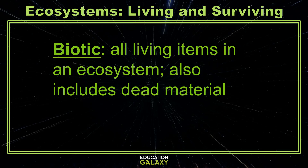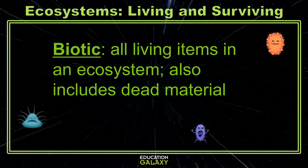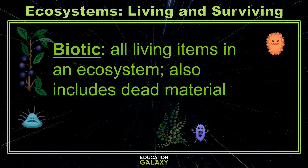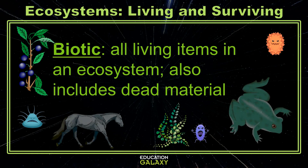Biotic. These are all of the living organisms in an ecosystem — things like bacteria, plants, and animals. Since these are all alive, they can also die or be dead.